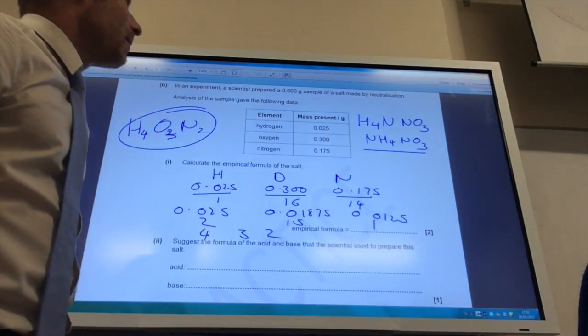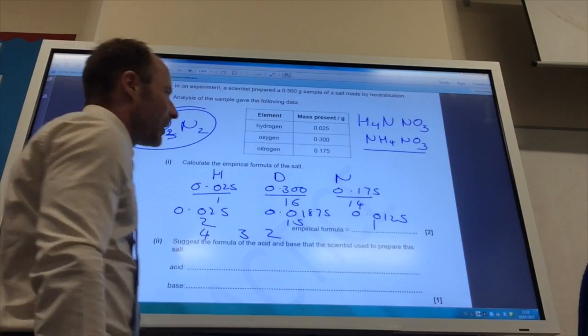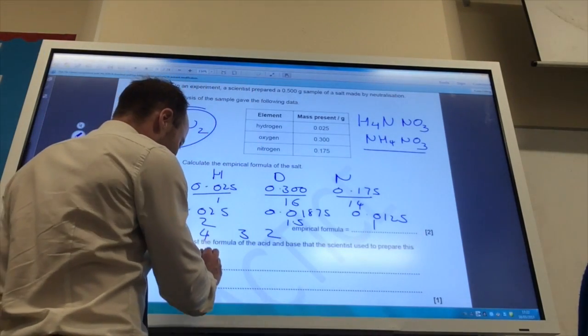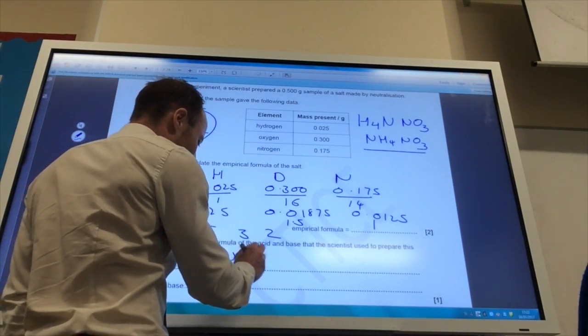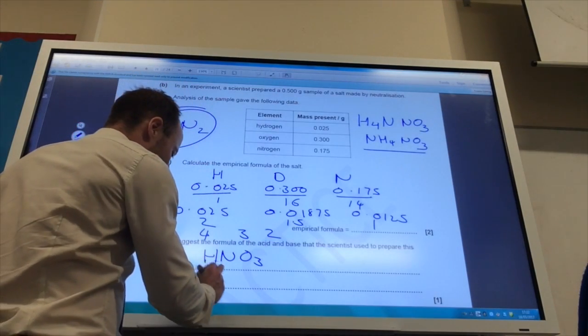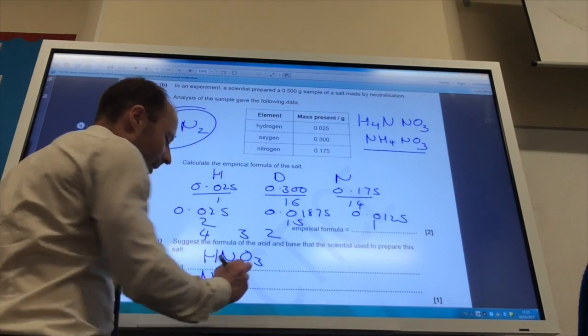So if I wanted to make ammonium nitrate, what acid would I use? Well, the acid I would use would be nitric acid to get the nitrate. How would I get ammonia? Well, the base I would use would be ammonia.